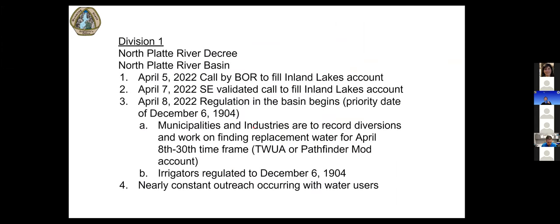Right now for the month of April, we have a call on. The Bureau puts out their forecast in February, March, April, and May to measure what's in storage and what is sitting on the mountain — the projected inflow. If that projected number doesn't meet the 1.1 million acre feet, depending on what reservoir or account we would be trying to fill, that would place a call. On April 5th, the Bureau provided those numbers and placed a call informing us that an allocation was imminent to fill the inland lakes account. We did some homework, double-checked, and on April 7th the State Engineer validated that call. As of April 8th, letters went out to everyone in the North Platte Basin and the call started on a priority date of December 6th, 1904 — the priority date for inland lakes. Municipalities and industries are recording their pumpage for each day from April 8th through the 30th.